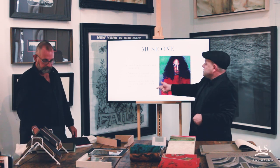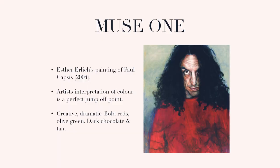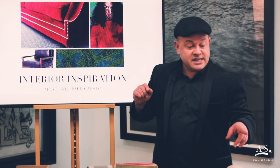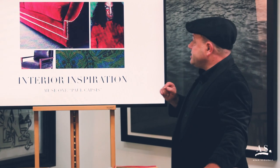I've sort of talked about this already — bold reds, olive green. It's a 2004 piece by Esther. I think Paul was about 40 at the time; it's actually written online. And I'm going to show you some samples.